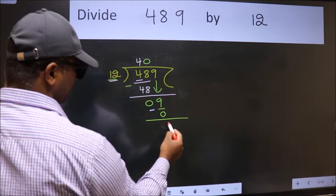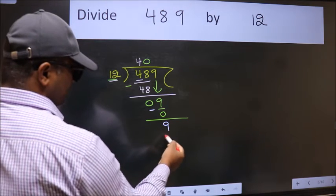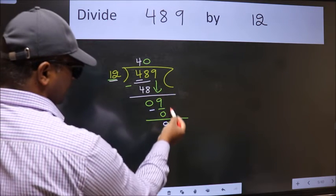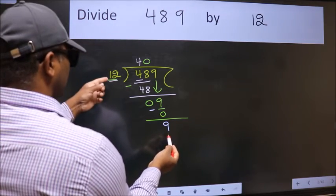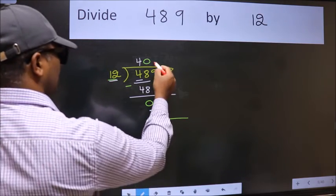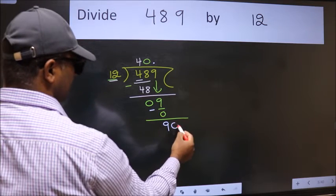Now we subtract and get 9. Over here, we did not bring any number down, and 9 is smaller than 12. So now we can put a dot and take 0.